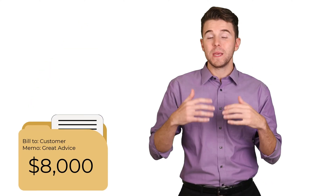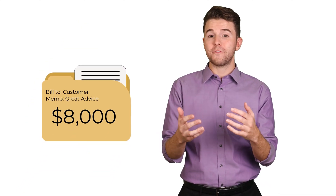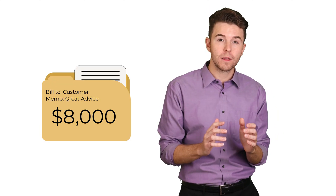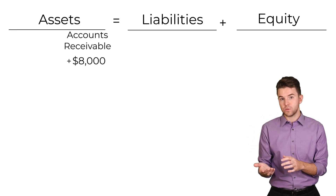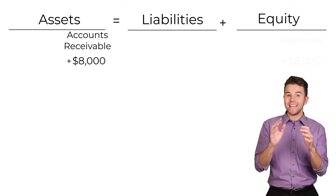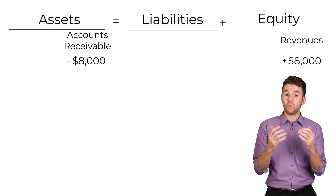Now that we have supplies and equipment, we're open for business. So we provide advisory services to a customer and send them a bill for $8,000. Because we didn't receive cash right after providing the services, this creates an accounts receivable, meaning the customer owes us money. To analyze this transaction, we increase assets by $8,000 under accounts receivable and increase equity by $8,000 under revenues.